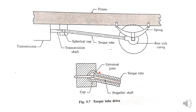In both Hotchkiss drive and torque tube drive, the leaf spring takes care of side thrust. When coil springs are used they are not able to take side load — only leaf springs can take side load. When coil type springs are used, a separate member called a panhard rod is used for side thrust. This is how your torque tube drive works.